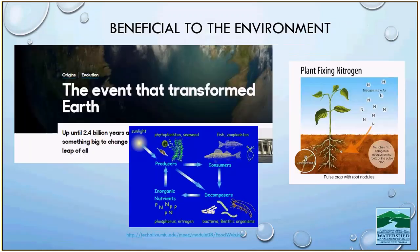Cyanobacteria are found pretty much everywhere and are beneficial to the environment. It's believed that the first organism to evolve the ability to conduct photosynthesis was a cyanobacterium. As a result, cyanobacteria became very successful — they produced oxygen as a byproduct of photosynthesis, and our atmosphere changed from one with very little oxygen to one with a lot. If that hadn't occurred, our earth might look very different, and humans and other mammals might not be around. As photosynthetic organisms, cyanobacteria are very important to lake food webs.